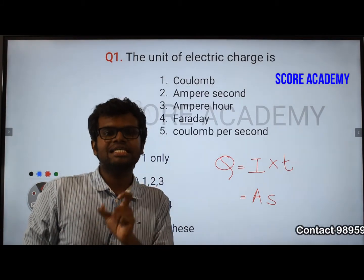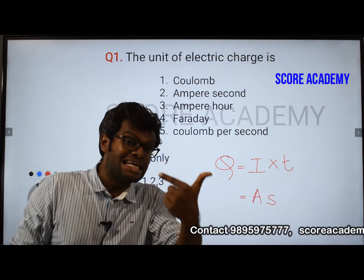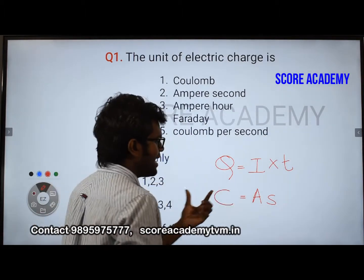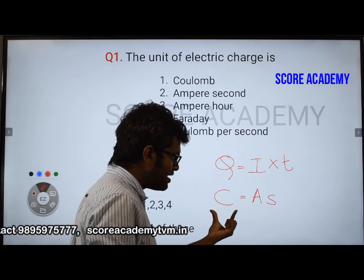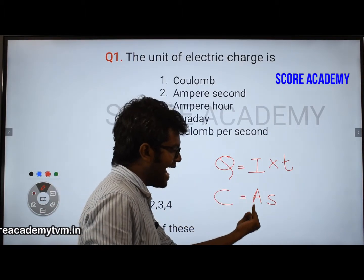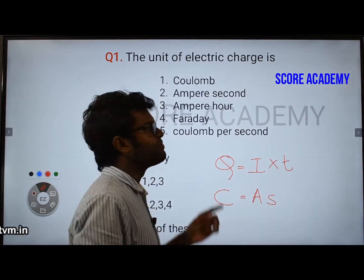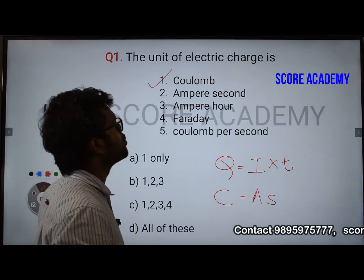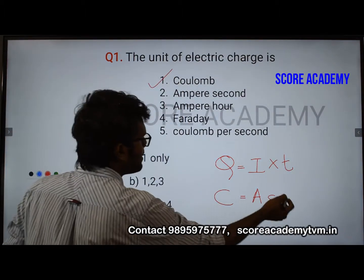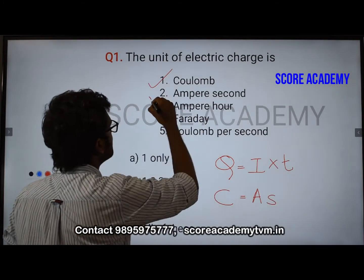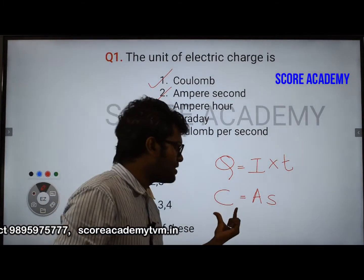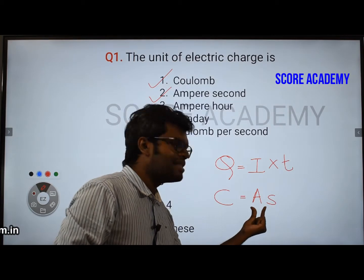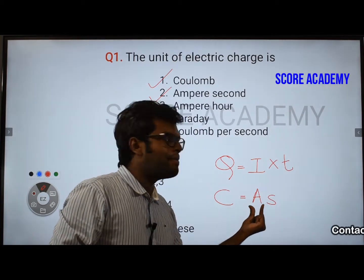Charge was defined in terms of ampere. It is a derived unit, based on ampere-second. Coulomb is an electric charge unit — it is an ampere-second unit. This is a derived unit. This is an important thing.